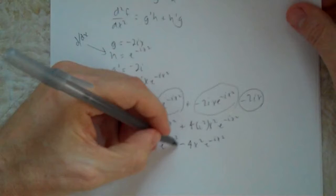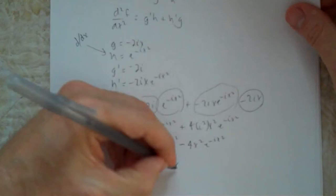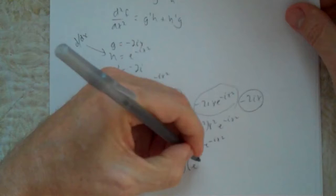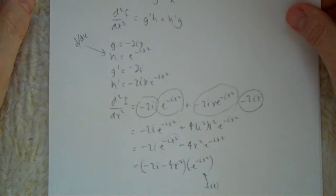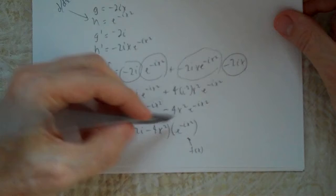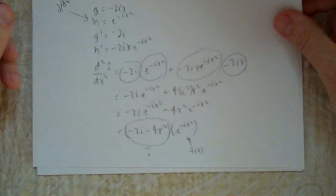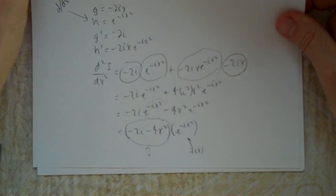Factoring out e^(-ix²), we get: (minus 2i minus 4x²) times e^(-ix²). And e^(-ix²) is my original function f. So the result is (minus 2i minus 4x²) times f.